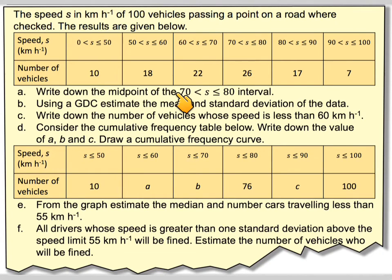Write down the midpoint of S between 70 and 80 interval. Using the GDC, estimate the mean and the standard deviation of the data. Write down the number of vehicles whose speed is less than 60 kilometres per hour. Consider the cumulative frequency table below. Write down the value of A, B and C. So we've got to find A, B and C from a cumulative frequency table using this.